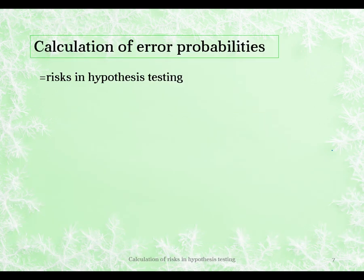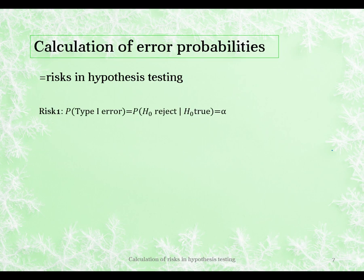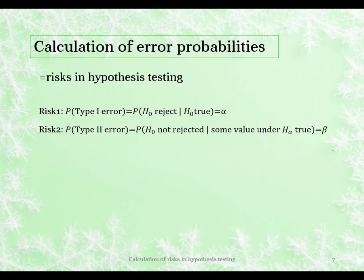For the calculation of error probabilities: the probability of making a type 1 error — the probability of rejecting the null when it's actually true — is denoted by alpha. Alpha is always the risk of committing a type 1 error. For a type 2 error, we call that beta. Beta is the probability of the null not being rejected given that some value under the alternative is true. Depending on what value we choose, beta will differ, but we always work with just a single value for alpha.